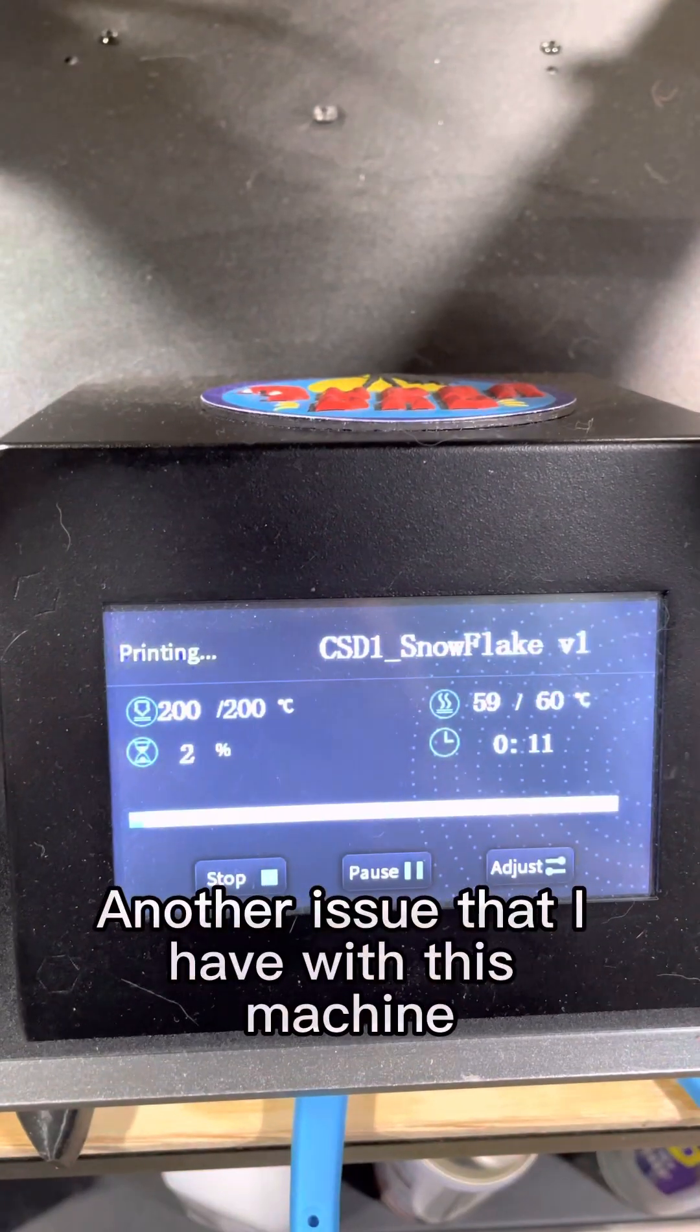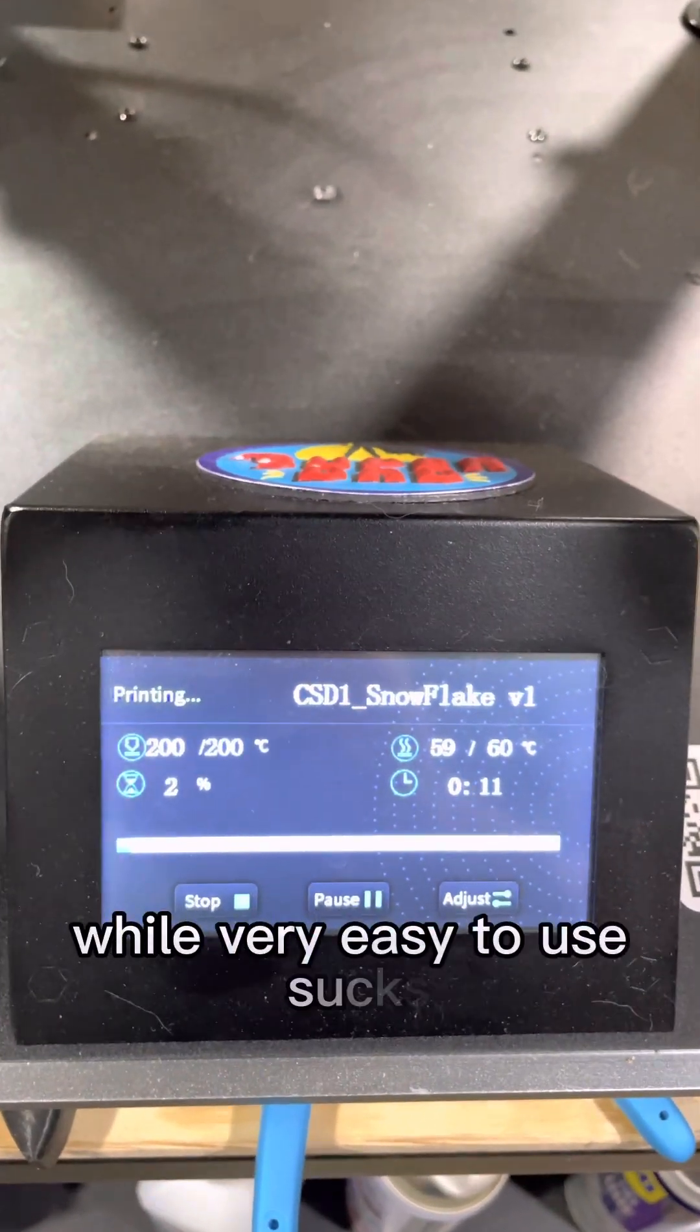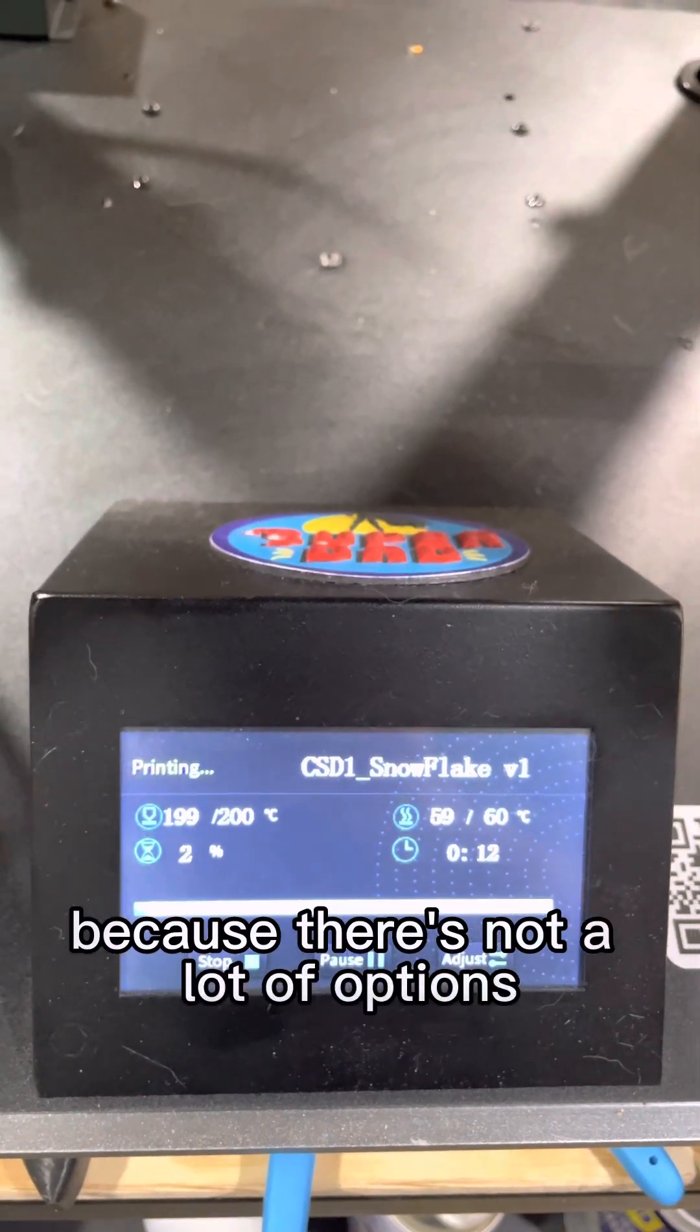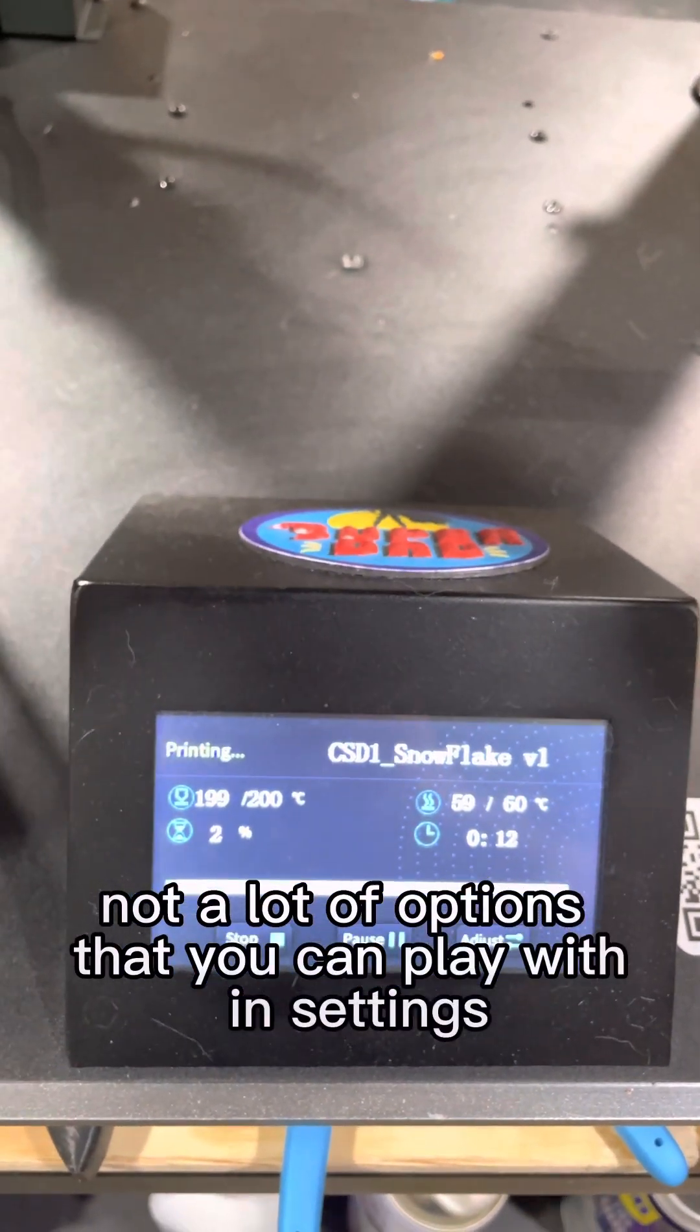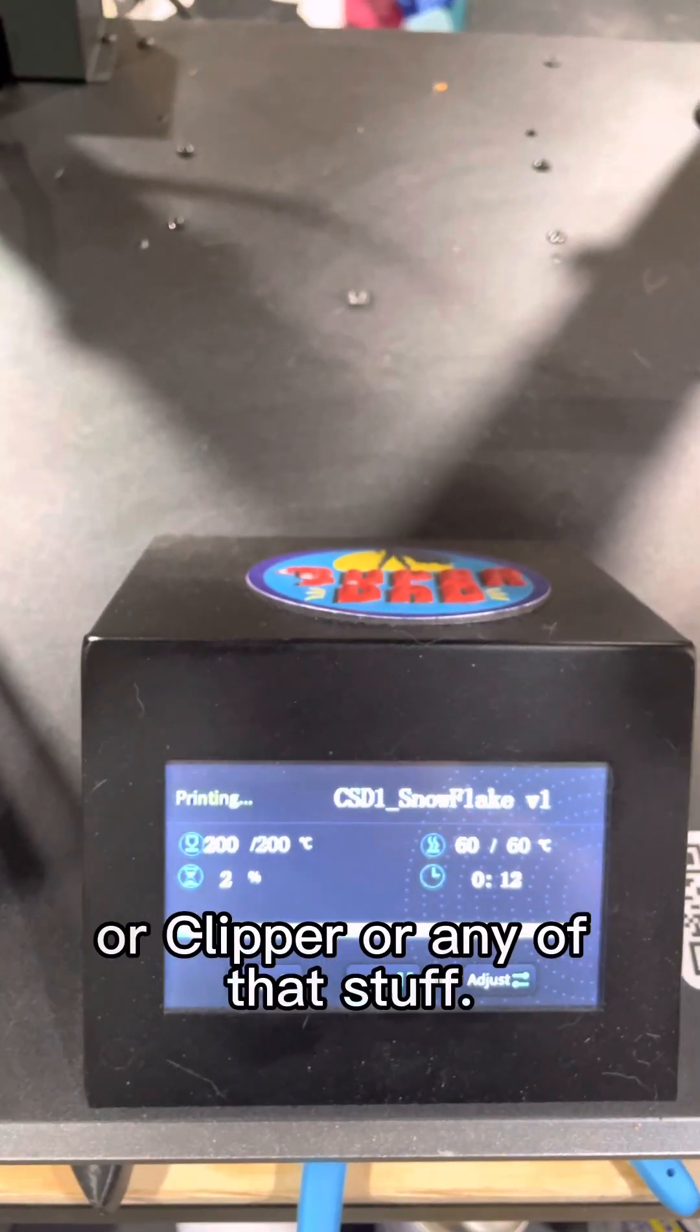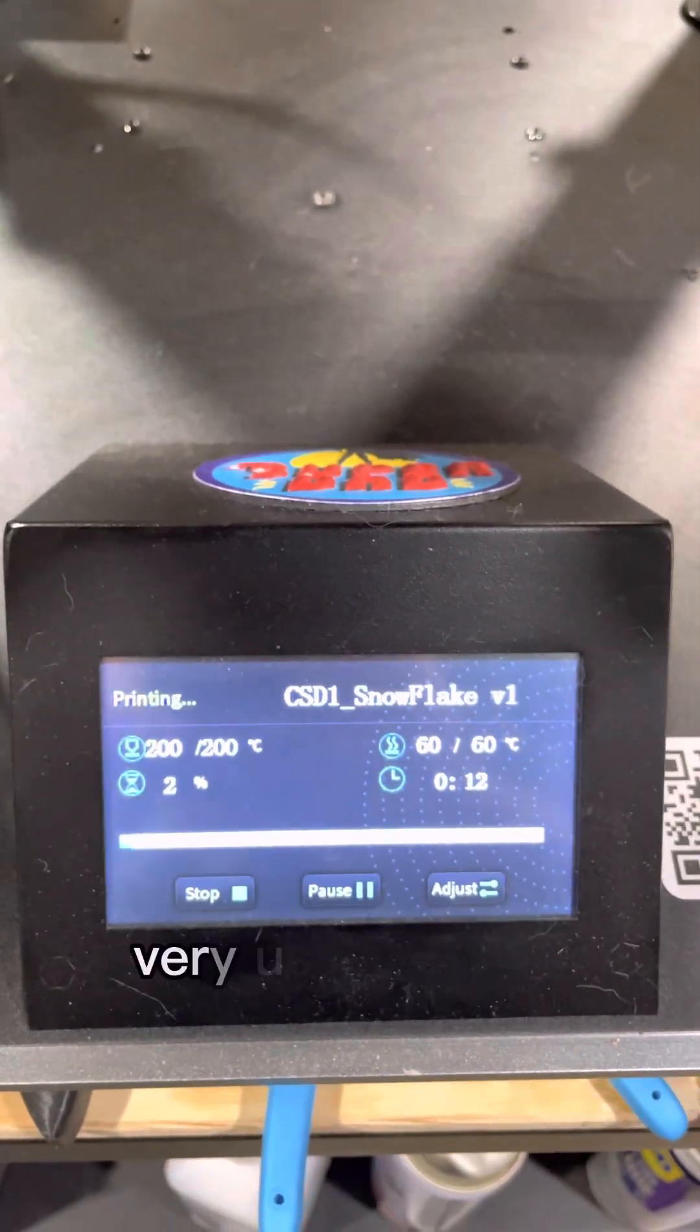Another issue that I have with this machine is that the interface, while very easy to use, sucks because there's not a lot of options. Not a lot of options that you can play with in settings like an Ender 3, you know, using the Marlin software or Klipper or any of that stuff. This is very user-friendly, but for the beginning user, for example, here are my adjustments.